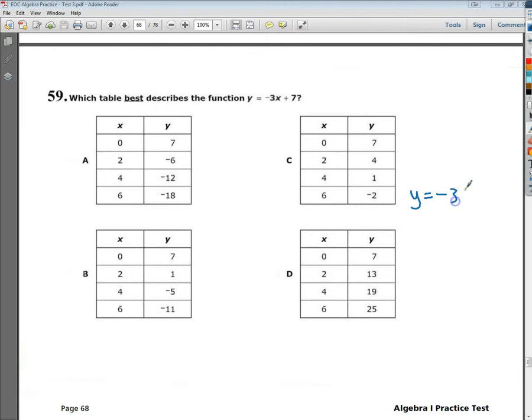When I try to plug in 0 into my equation, this would be negative 3 times 0, which is 0, plus 7 more is 7. So when I get 0, I should have a 7 that matches it. Now, all of them have that set up.